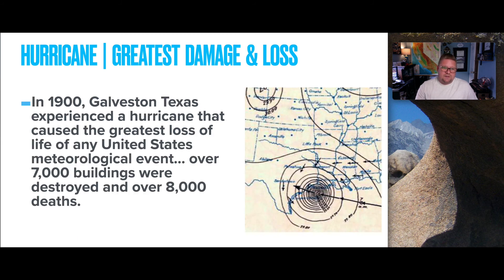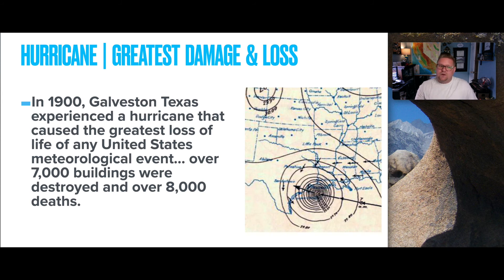In 1900 — over 120 years ago — Galveston, Texas experienced a hurricane that caused the greatest loss of life of any United States meteorological event. Over 7,000 buildings were destroyed and over 8,000 lives were lost. This was one of the largest hurricanes ever observed at that point.